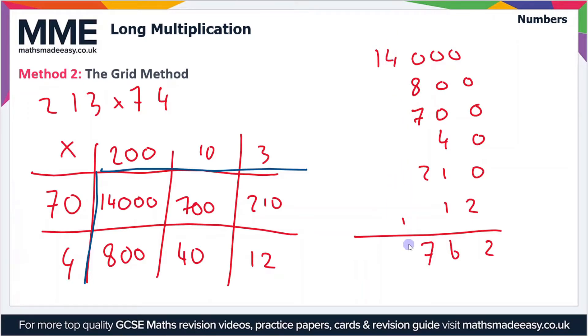Then we have 4 plus that 1 is 5, and then finally we just have a 1 in this column. So our final answer is 15,762.